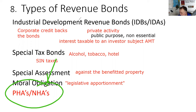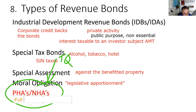Public housing authority bonds: the best credit quality possible is that of the United States government. There are three ways to get that credit quality: direct obligations from the U.S. Treasury (T-bills, T-notes, T-bonds); Ginnie Maes; and public housing authority bonds — also called national housing authority bonds — which also have the full faith and credit of the United States government. Nothing better than that.